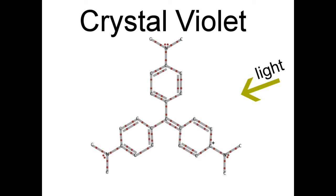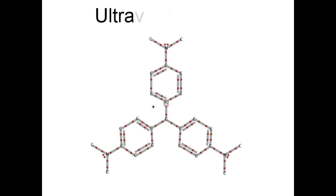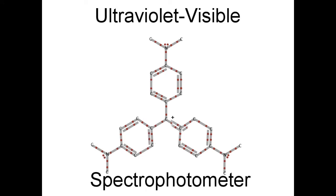But you don't have to take my word for it. We can actually measure how crystal violet absorbs light in the laboratory, using an instrument called an ultraviolet visible spectrophotometer. So let's do that.